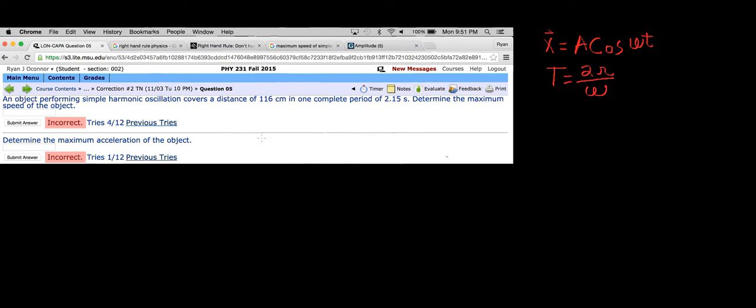If we look at what they gave us, they didn't give us a displacement value. They gave us a total distance of 116 centimeters, or 1.16 meters, which equals our total distance in one period.